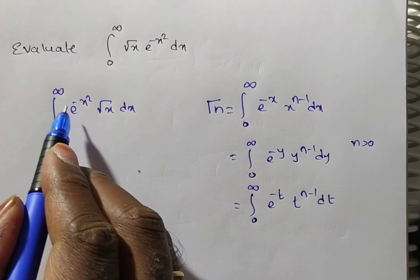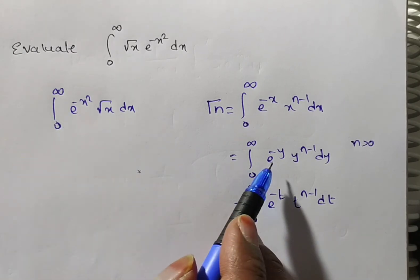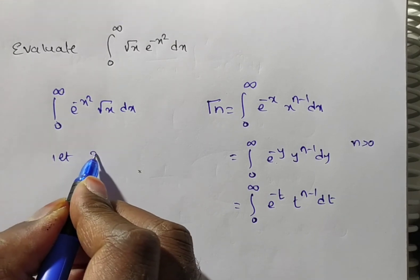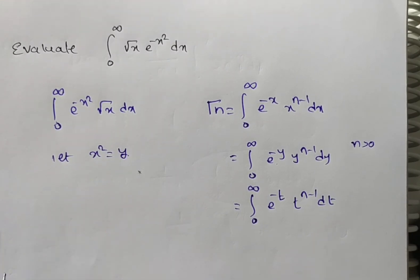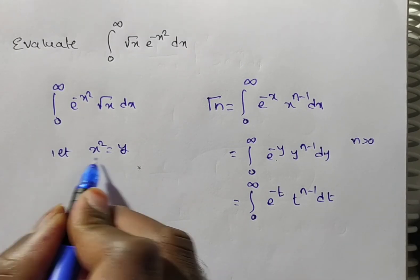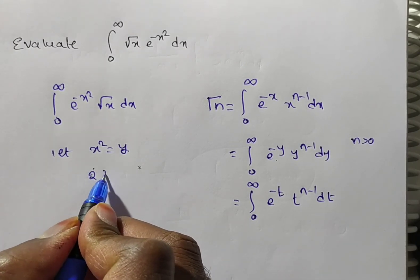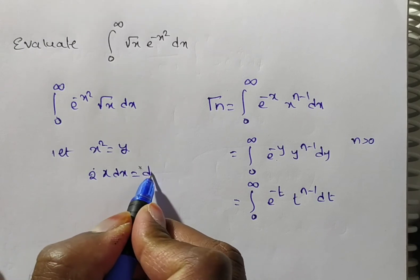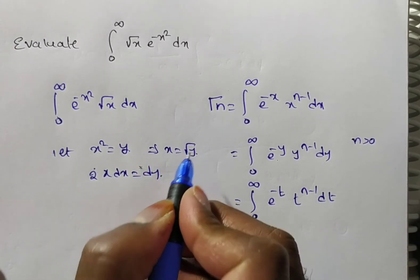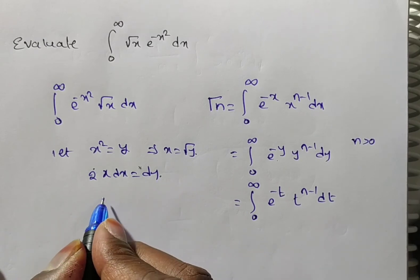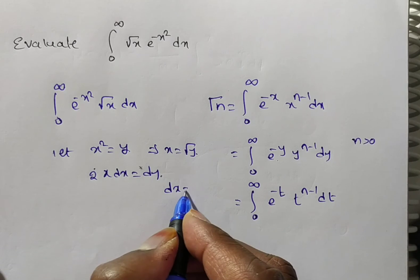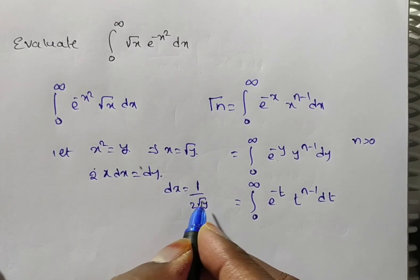The integral from 0 to infinity should have e to the power minus y type, but here we have x squared. So let x squared equal y. Differentiate both sides: 2x dx equals dy. From this, x equals root y. So dx equals 1 by 2 root y dy.